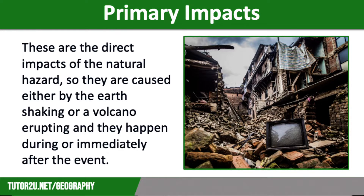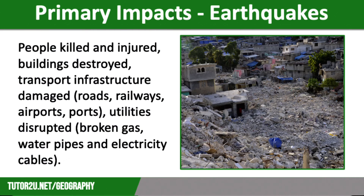Primary impacts are the direct impacts of the natural hazard. They are caused either by the earth shaking or a volcano erupting, and they happen during or immediately after the event. Primary impacts include loss of life and numbers injured. In earthquakes, this is those who are killed and injured by collapsing buildings and falling rubble.